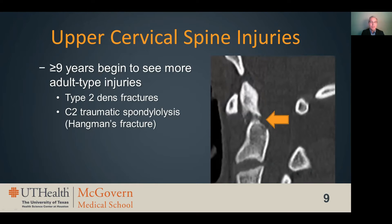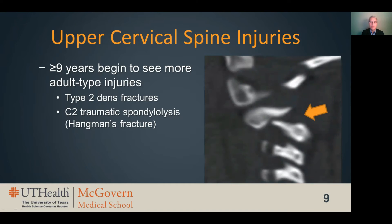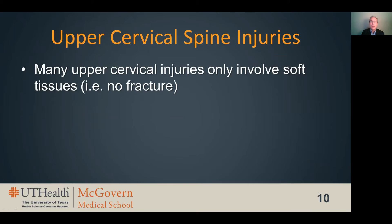Once kids reach nine years of age, they start to exhibit injuries similar to what we encounter in young adults, such as type 2 dens fractures or traumatic spondylolysis at C2, commonly referred to as a hangman's fracture. It is important to remember that even though older children will have some more adult-type injuries, they are still susceptible to distraction and synchondroses injuries, just not as much as very young patients. Distraction is the most common injury morphology of the upper cervical spine in children, and distraction injuries can present as only soft tissue injury without fracture.